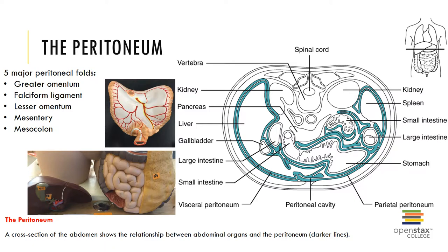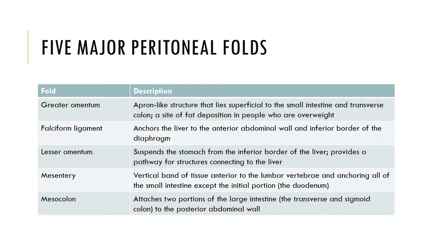The peritoneum is shown in this slide, demonstrating the five major peritoneal folds: the greater omentum, the falciform ligament, the lesser omentum, mesentery, and mesocolon. The greater omentum is a peritoneal fold that lies superficial to the small intestine and transverse colon, and is where fat deposition occurs in the abdomen. The falciform ligament anchors the liver to the anterior abdominal wall. The lesser omentum suspends the stomach from the inferior border of the liver. The mesentery is a vertical band of tissue anterior to the lumbar vertebrae that anchors the small intestine. The mesocolon attaches two portions of the large intestine to the posterior abdominal wall.